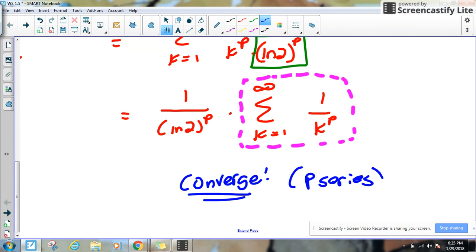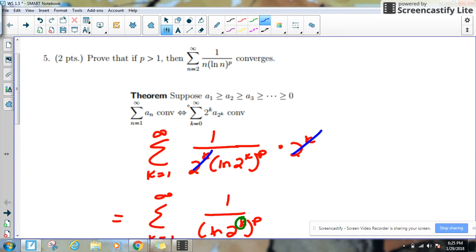Okay? And if we proved that this series right here converges, then from the original theorem, we know that if this, what we were working with just now, converges, then this, our original problem, also converges. So we are done.